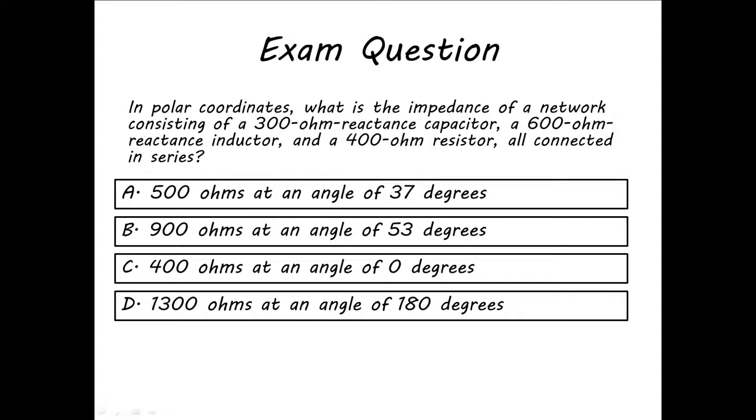In polar coordinates, what is the impedance of a network consisting of a 300-ohm reactance capacitor, a 600-ohm reactance inductor, and a 400-ohm resistor, all connected in series?